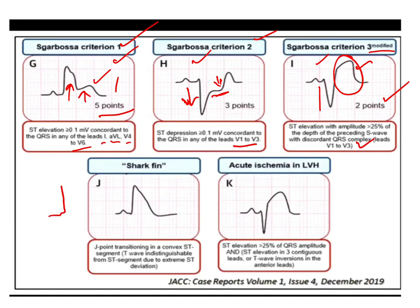There is also the shark fin appearance — if this sharp-fin ECG pattern is seen, we should think of ischemia. This involves J point transitioning into a convex ST segment and T wave, with extreme ST deviation making it difficult to distinguish the T wave. The entire ST segment gives the appearance of a sharp fin.